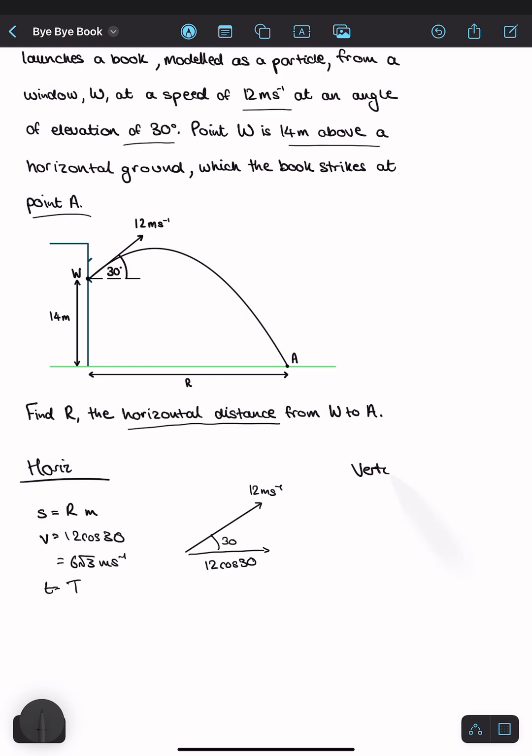Vertically, you have gravity acting. So there's acceleration, which is why we're going to use SUVAT. So first, I'm going to choose my direction to be positive. Let's say upwards is positive.